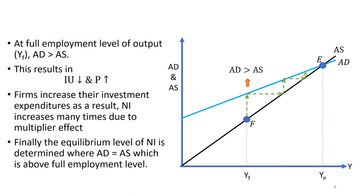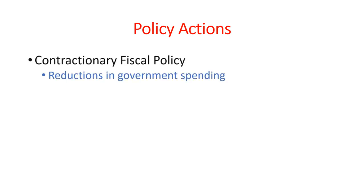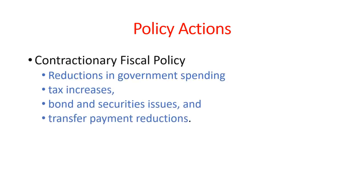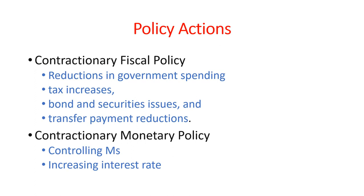The policy actions needed to correct inflationary gaps are opposite to those for deflationary gaps. The government should adopt a contractionary fiscal policy by reducing government expenditures, increasing taxes, issuing bonds and securities, or reducing transfer payments. The other tool is contractionary monetary policy, which can be applied by controlling money supply or by increasing the interest rate.